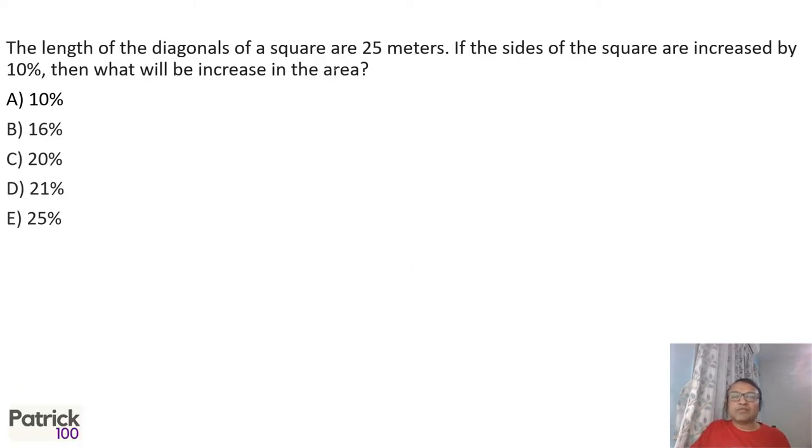The length of a diagonal of a square is 25 meters. If the sides of the square are increased by 10%, then what will be the increase in area? And this is a common geometry property.